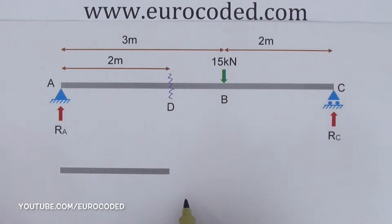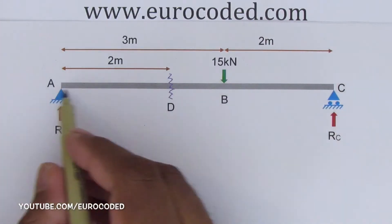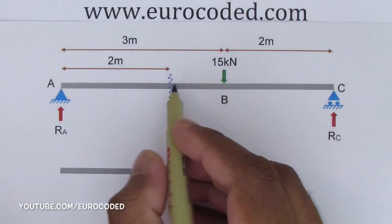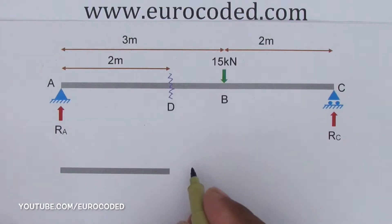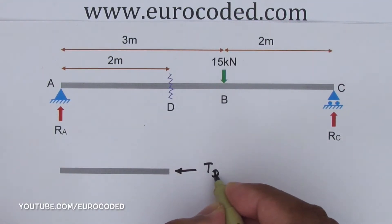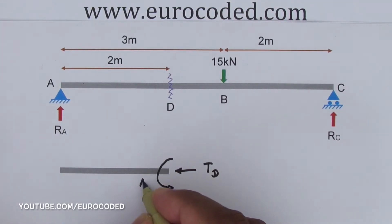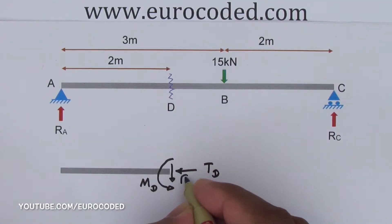Now we can start drawing the free body diagram. The key is to include the real forces and moments present in our beam or in our structural system at any point we take a cut. Therefore, I'm going to note the axial force at this cut as TD and the bending moment as MD, shear force as FD.